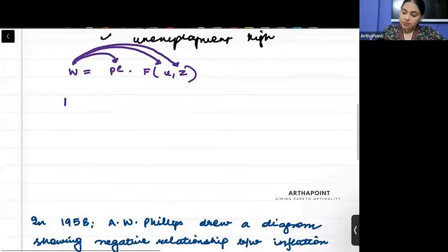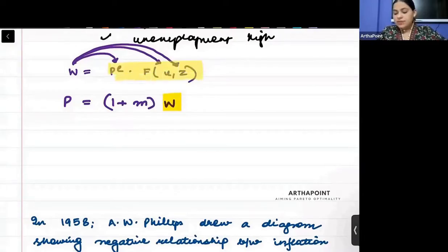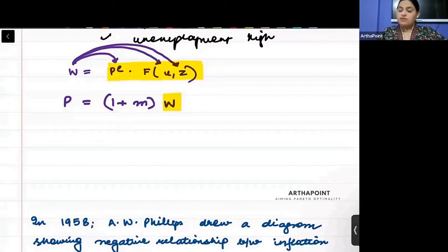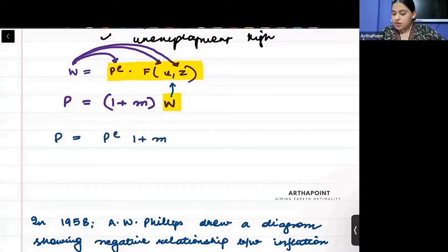The other relation is that price is a markup over wages. Now, since we were equating the wage-setting and price-setting relations, we can replace W with the price-setting expression. So we can write: P = PE · (1 + M) · F(U, Z).